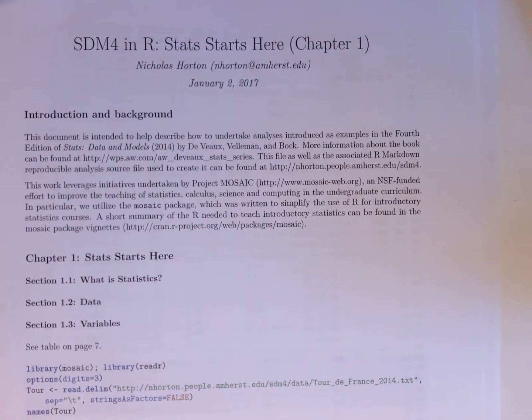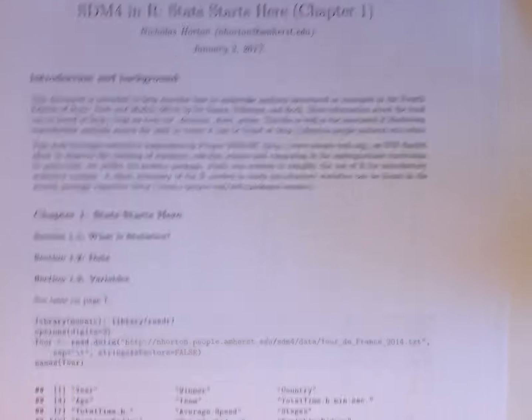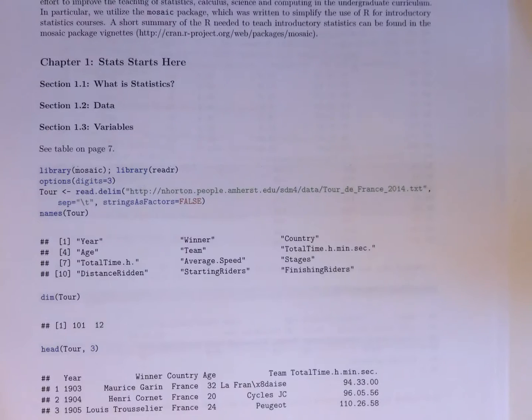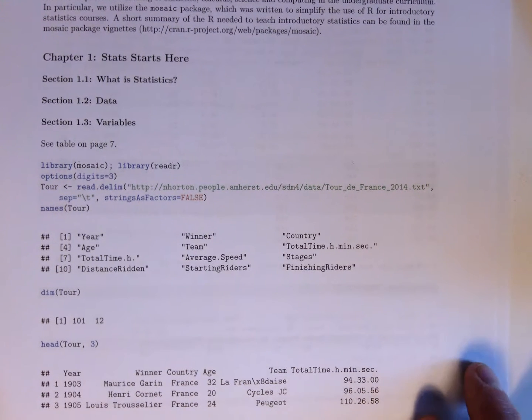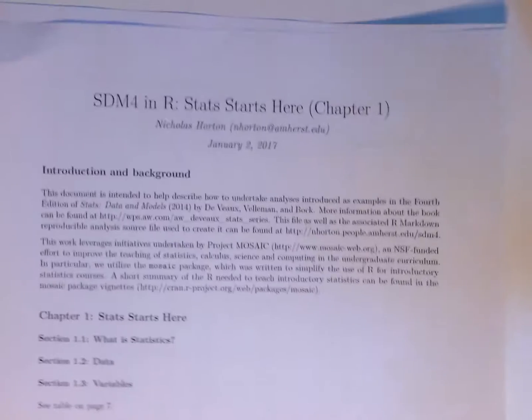But each chapter that has significant amount of R includes these SDM for in R examples. And what it allows us to do is to be going ahead and replicating some of the analyses. So here I've given the code to read in the data from the Tour de France, and we can see what the names of the different variables are, the dimensions of that, the number of rows and columns, the first three lines of those data.